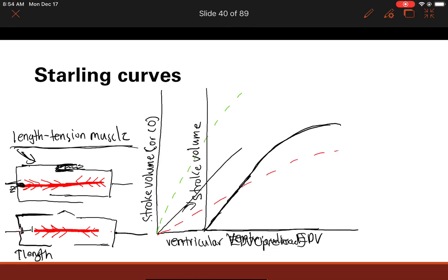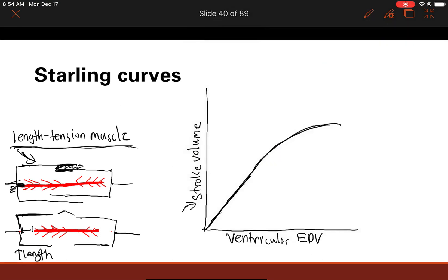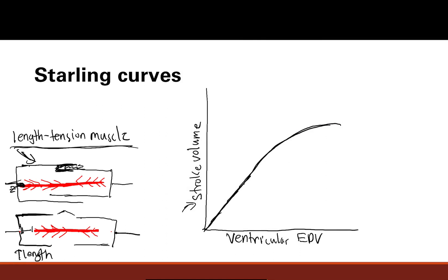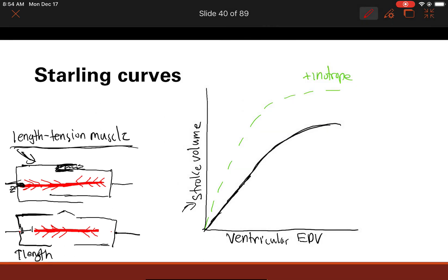A couple of things can shift the Starling curve. There are agents that can increase your heart contractility — called positive inotrope effect — and when that happens, your curve will get shifted up. Then there are things that can decrease contractility, called negative inotropes, which means that for a given end-diastolic volume, you're going to get less blood pumped out. An example of a negative inotrope is heart failure, when the muscle stops working well. For positive inotropes, you can have medications such as dobutamine or catecholamines like norepinephrine, which can increase your inotrope effect.